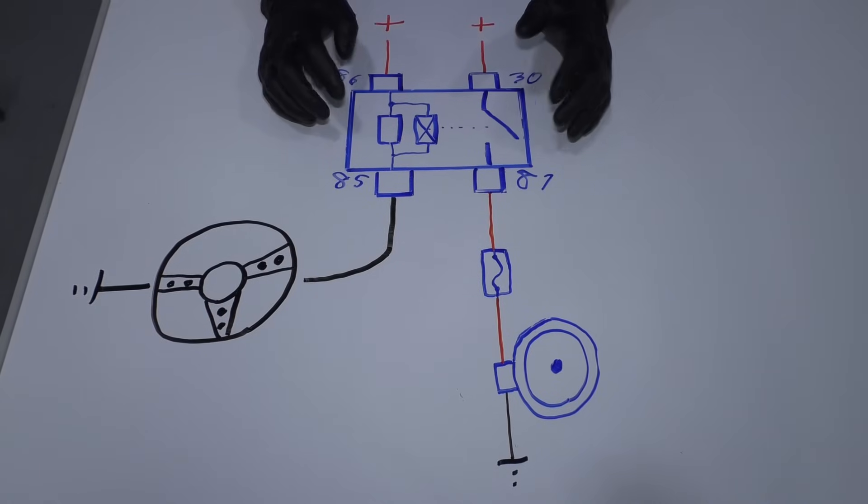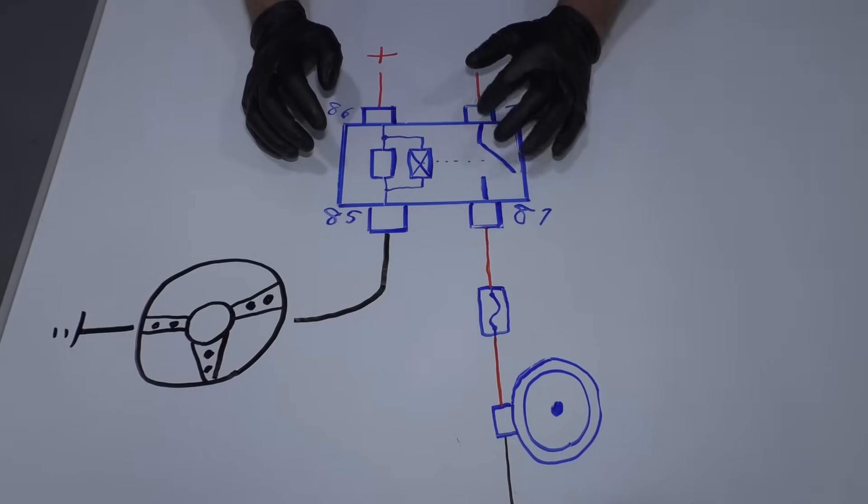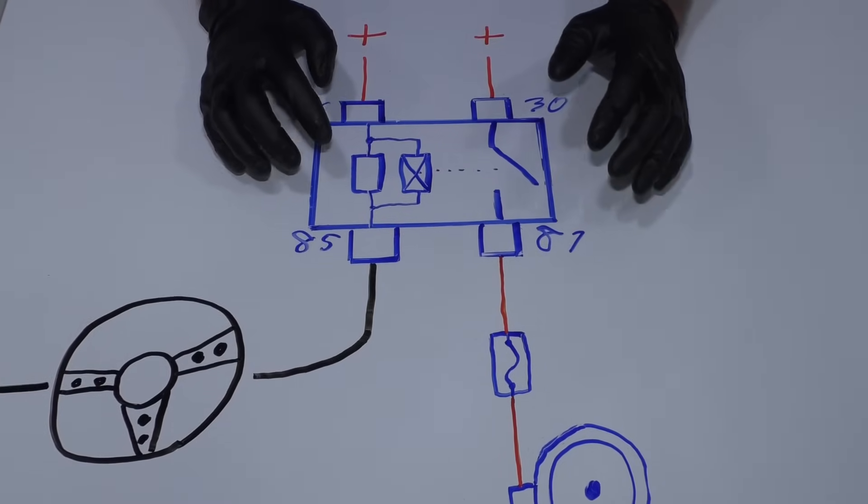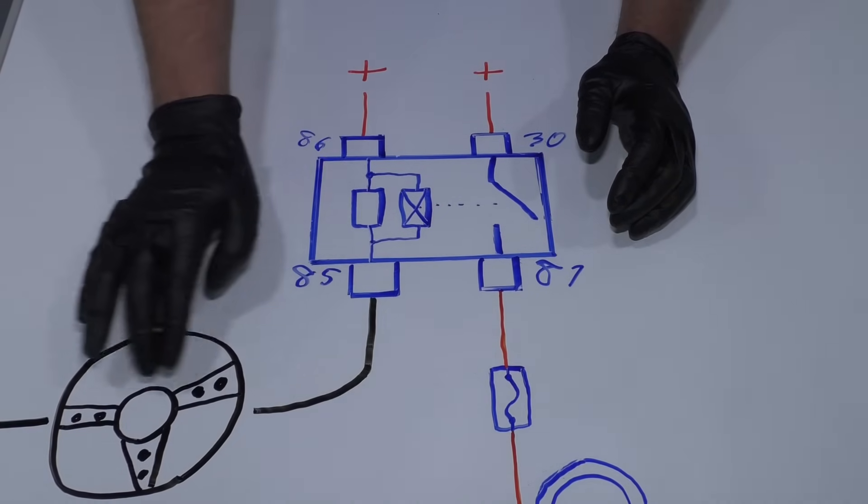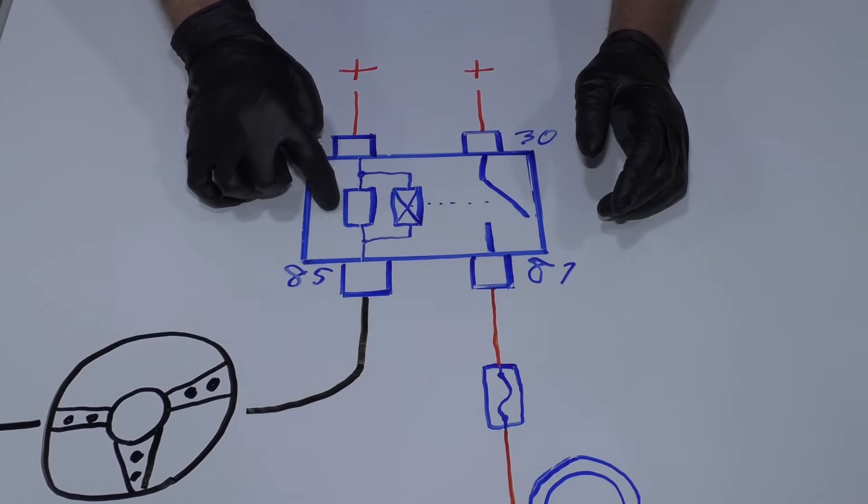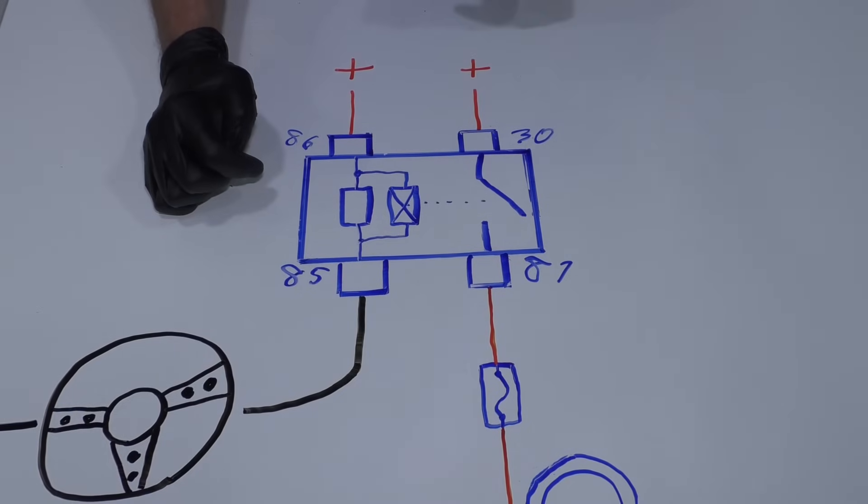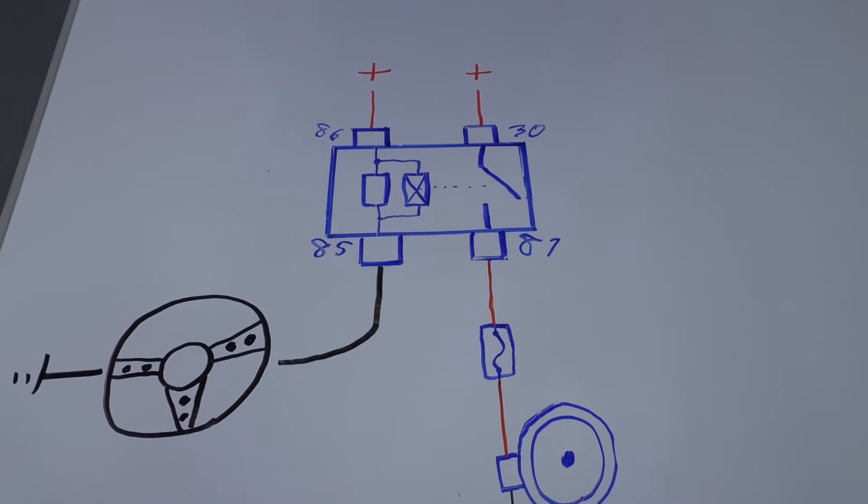The relay could burn out over time, although they're made for this. They're made to have a lot of amperage go through them. And then you're going to have the lower amperage circuit for the button. It doesn't take a lot of amps to get the relay to click, and that will make that work, and that's why you have a relay.